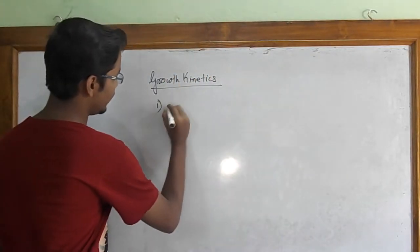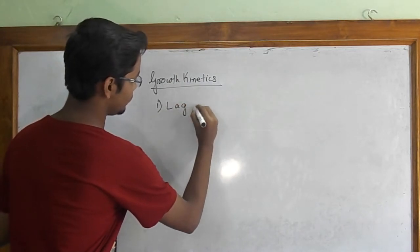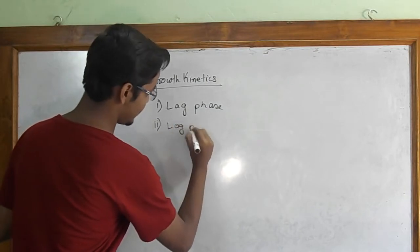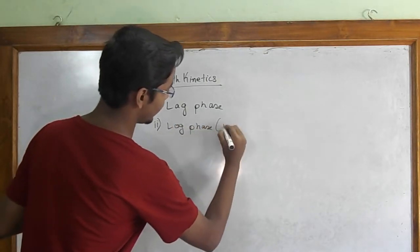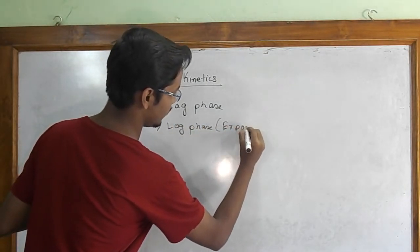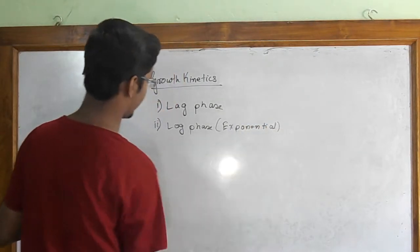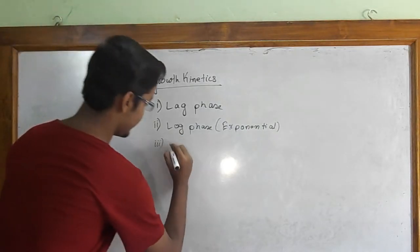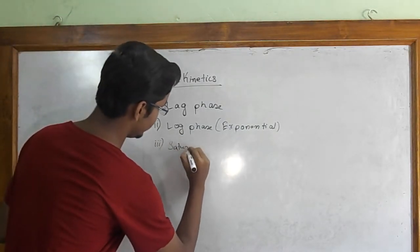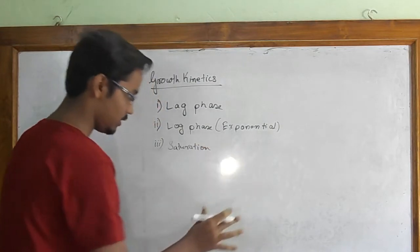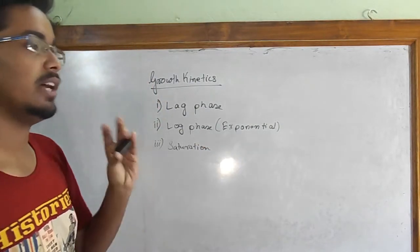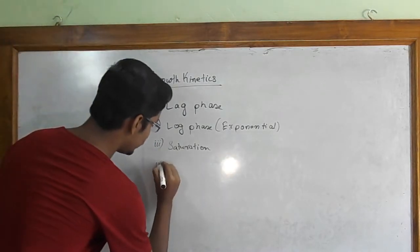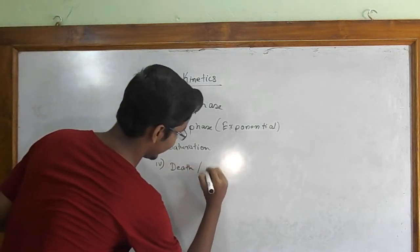If we divide the stages of development, we find four growth stages. The first is the lag phase. The second is the log phase, also called the exponential phase, as growth here is exponential. The third is the staturation phase, where growth stops and cell numbers are saturated. The last is the death phase or decline phase.